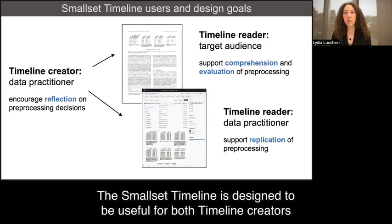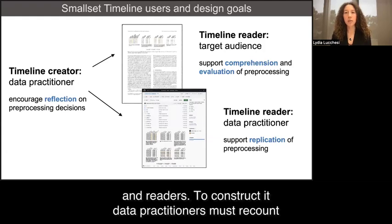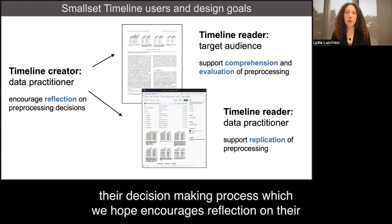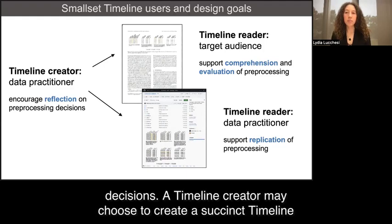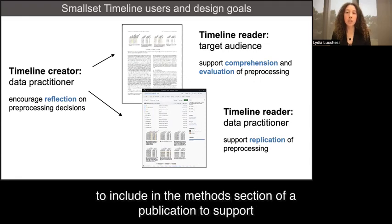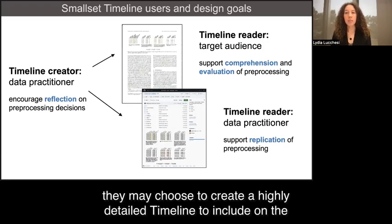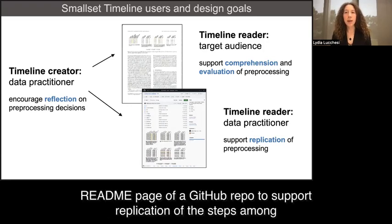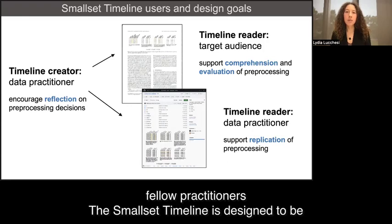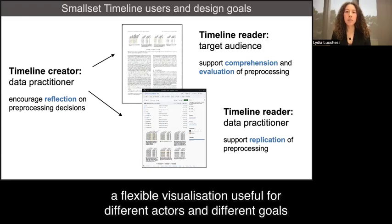The Small Set Timeline is designed to be useful for both timeline creators and readers. To construct it, data practitioners must recount their decision-making process, which we hope encourages reflection on their decisions. A timeline creator may choose to create a succinct timeline to include in the methods section of a publication to support comprehension and evaluation among their target audience, or they may choose to create a highly detailed timeline to include on the readme page of a GitHub repo to support replication of the steps among fellow practitioners. The Small Set timeline is designed to be a flexible visualization useful for different actors and different goals.